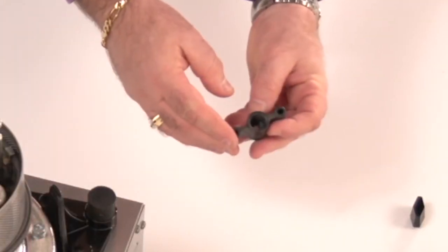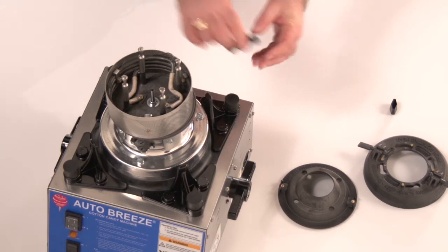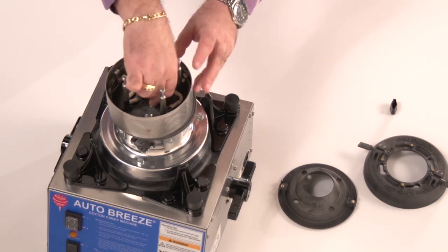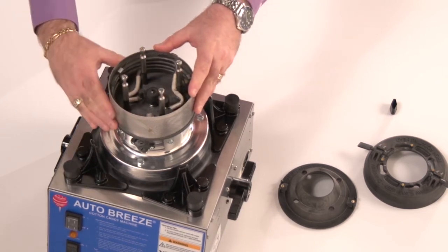Now this hold down bracket has two ears on either side. Those ears go over the electrical connection, so when you reinstall that, you make sure that those are tight over the electrical connection.